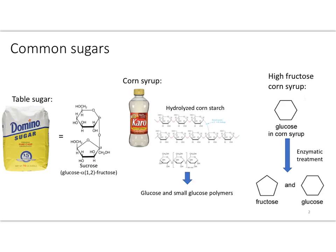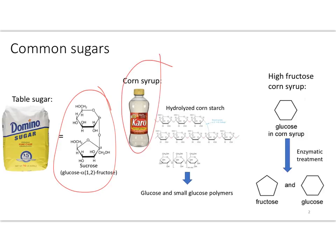This slide is to remind you about the biochemical structure of several common sugars or sweeteners. On the left we see table sugar or sucrose, which is a disaccharide of glucose linked to fructose. In the center is corn syrup, which is essentially just hydrolyzed cornstarch — it's all glucose and small polymers of glucose. On the right is high fructose corn syrup, where we start with the glucose in corn syrup and it's enzymatically treated to convert some of that glucose into fructose.